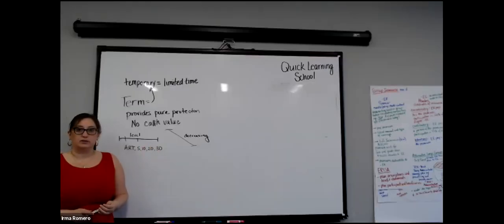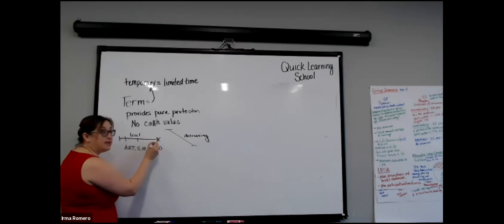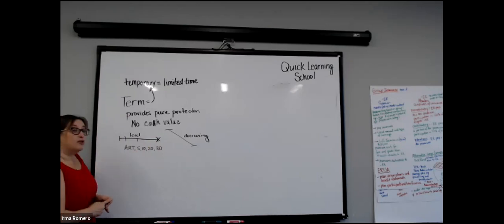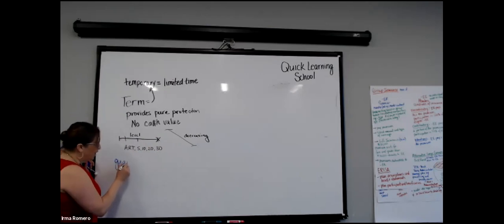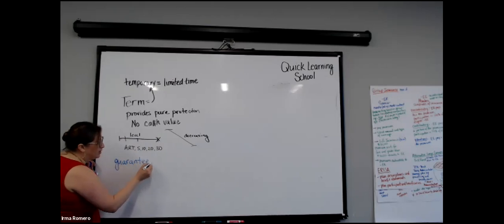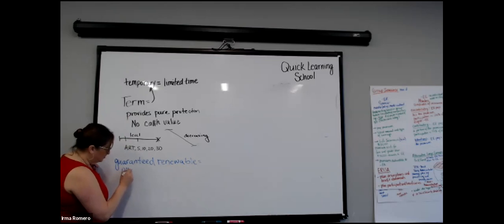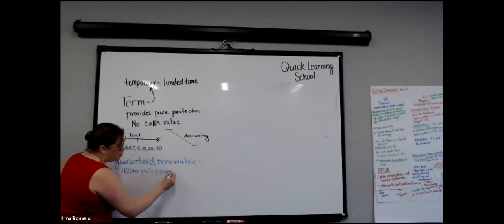What happens at the end of 20 years? It expires — there's no coverage. But some policies have an option: guaranteed renewable, or you can convert to whole life. If it goes into guaranteed renewable, the coverage continues, but the premium increases every year. The guaranteed renewable feature allows the policy owner to continue coverage.